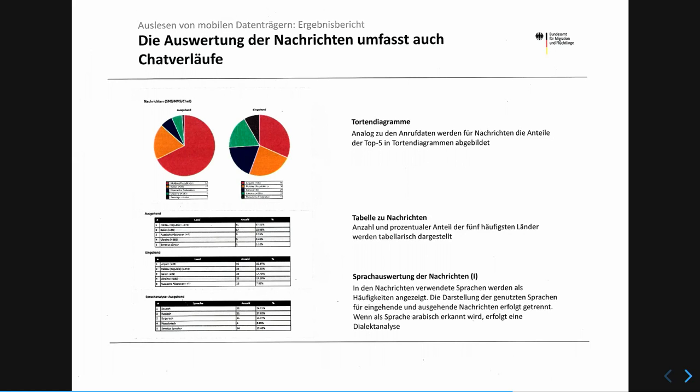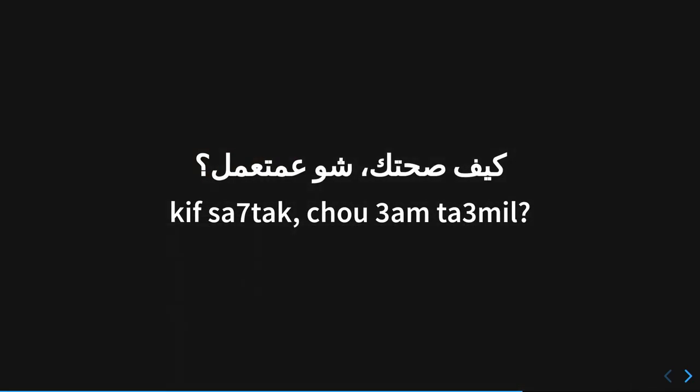When Arabic is detected in messages, it's categorized by dialect. In Arabic, there are different dialects of chat lingo — Arabic symbols sometimes substituted with numbers on a Latin keyboard, varying by country and dialect. According to BAMF, the system can detect 130 different dialects, though we're not sure how well it actually performs.